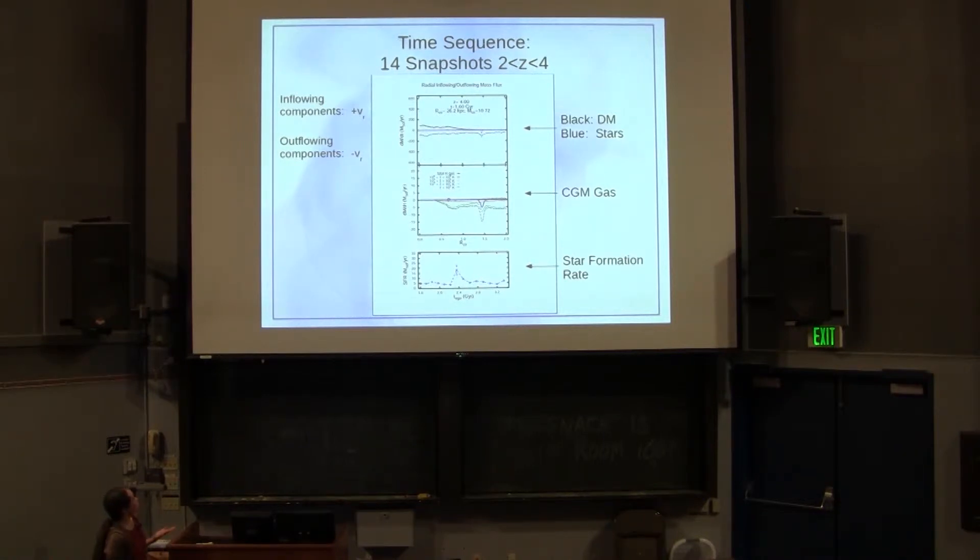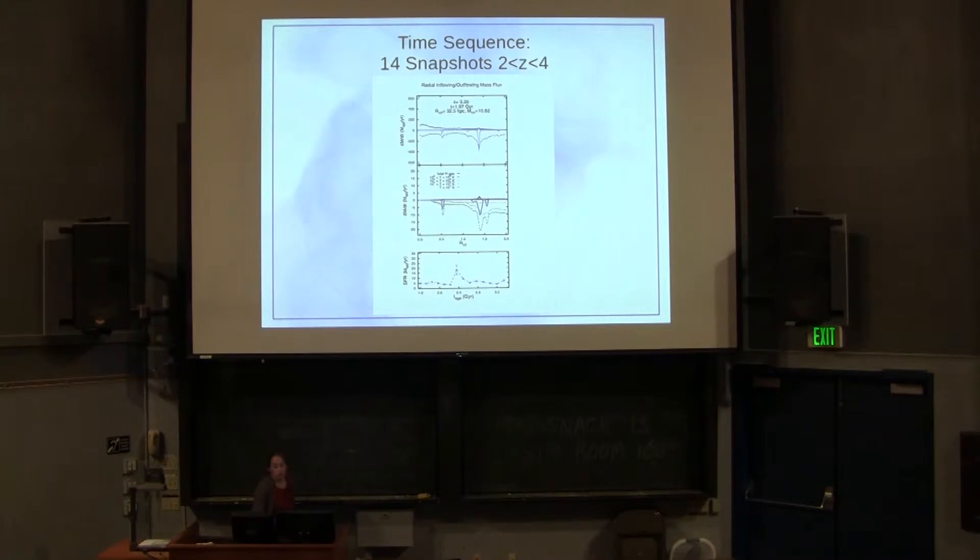We also separated out the components into inflow and outflow and considered them separately. Everything that's positive is outflow and everything that's negative is inflow. So as we step along through time, you can see these structures, these satellites coming in towards the disk. You can see substructure coming in and whether or not there is gas associated with them.